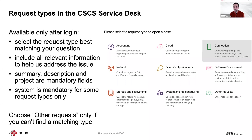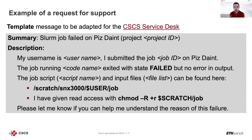Include relevant information to help address your issue — summary, description, and project are mandatory fields; system is mandatory for some request types only. If no type matches, use 'other'. An example template: summary could be 'SLURM job failed on Piz Daint,' include your project ID, and in the description provide your username, the script submitted, the job output, the job status, and paths to your job script. Remember to make those paths accessible using 'chmod'.